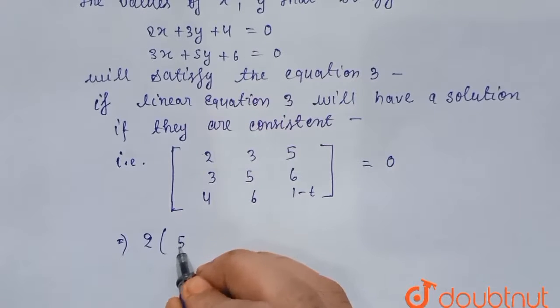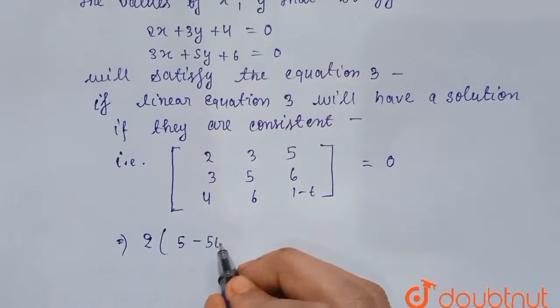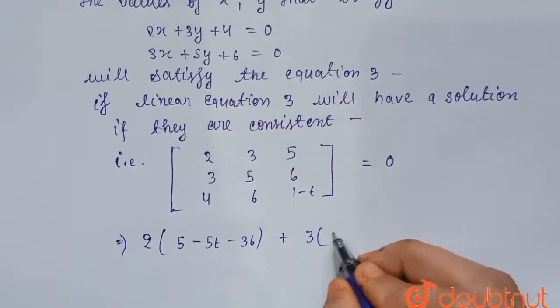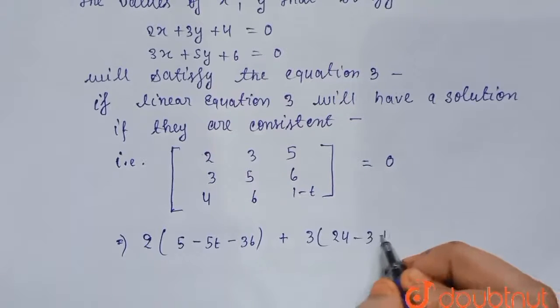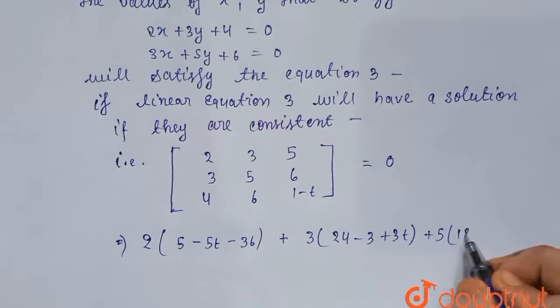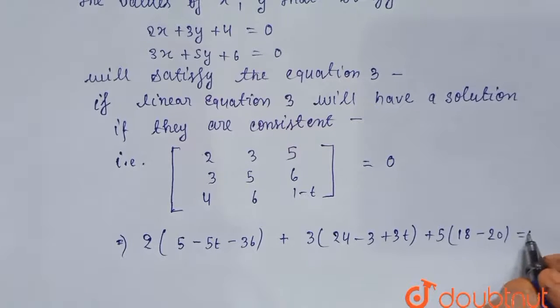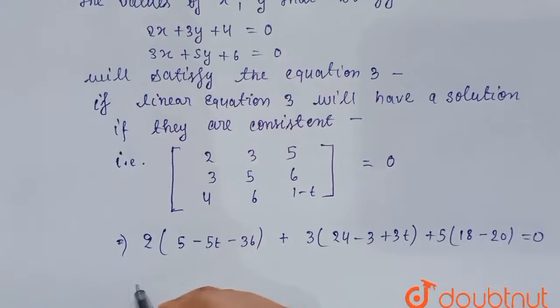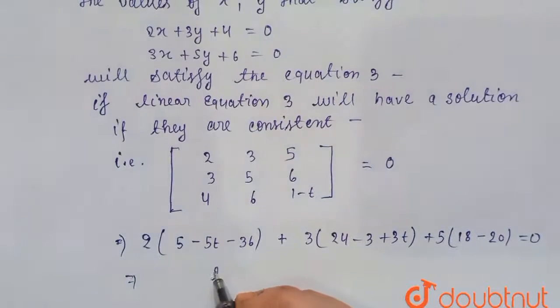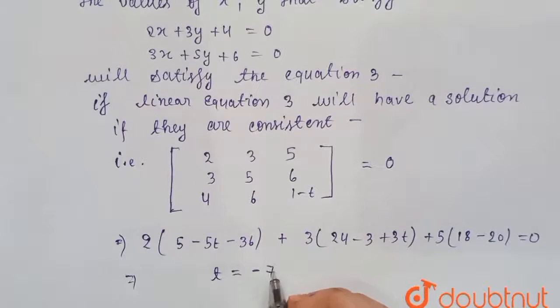2 into 5 minus 5t minus 36 plus 3 into 24 minus 3 plus 3t plus 5 into 18 minus 20 equals to 0. When we solve this, we will get t is equal to minus 7.